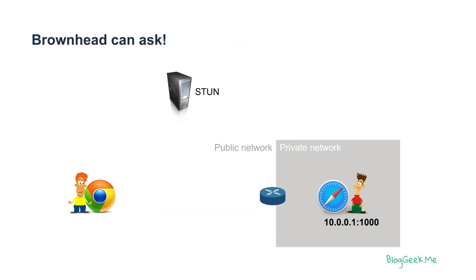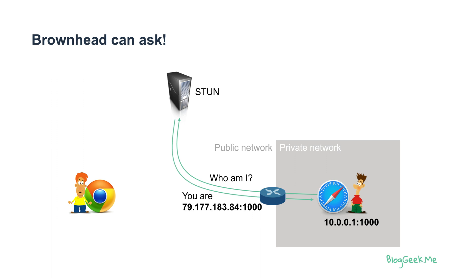In order to solve that, Brownhead can go and ask what his public IP address is. He knows that he's 10.0.0.1 because that's what his machine knows, but he can also go to a STUN server on the public network and ask, "What do you see as my IP address? Who am I?" The STUN server will reply back giving him his public IP, because this is what the STUN server saw on the network. Brownhead can then send that public IP address information to Redhead, and Redhead can try to access him directly.